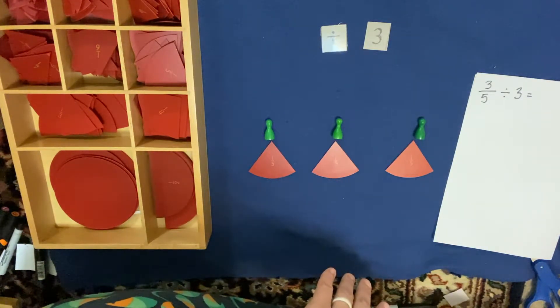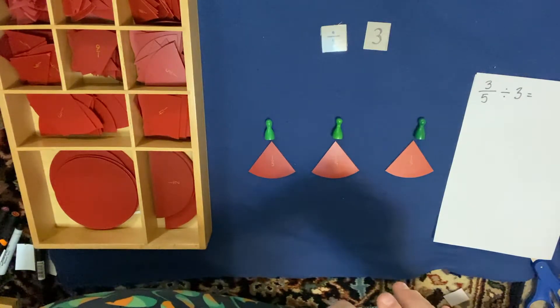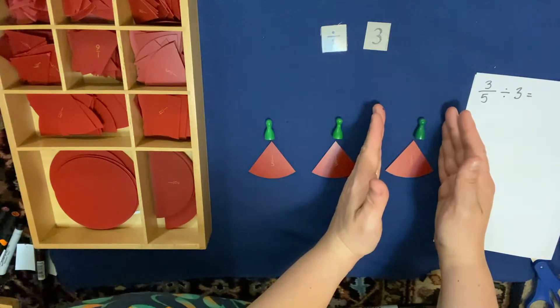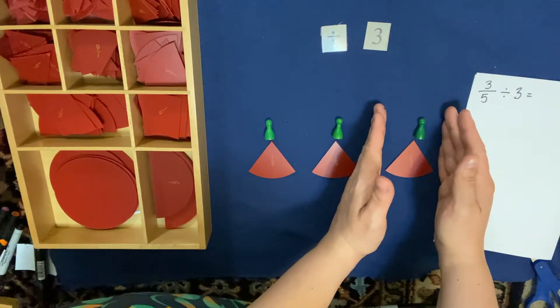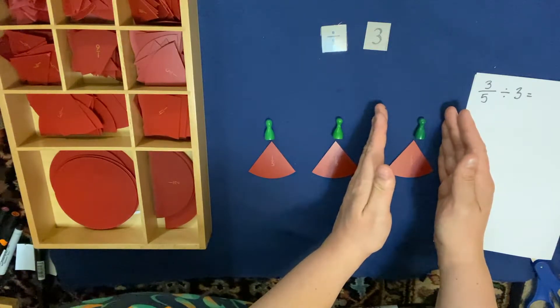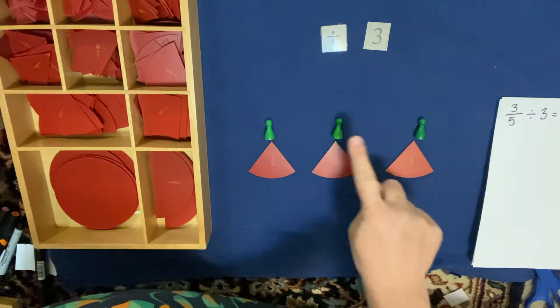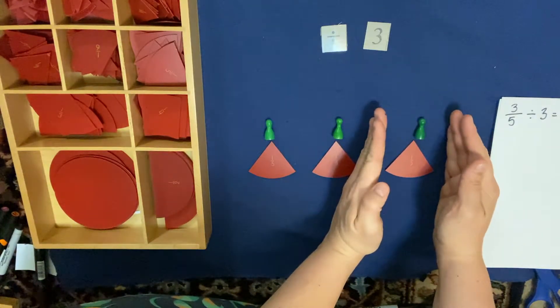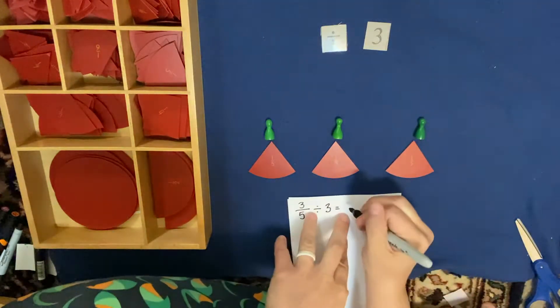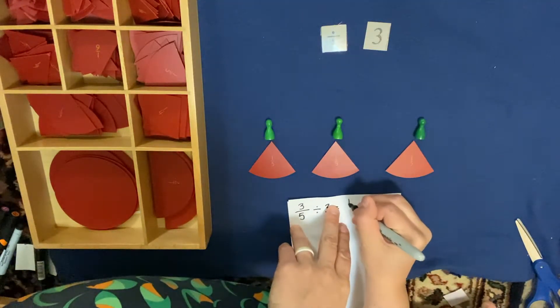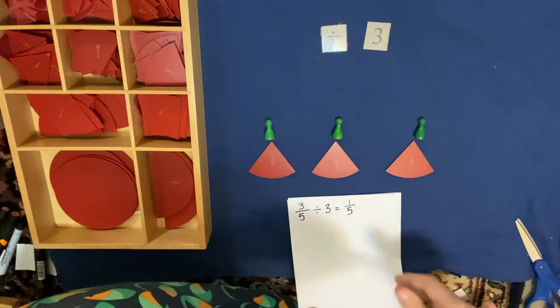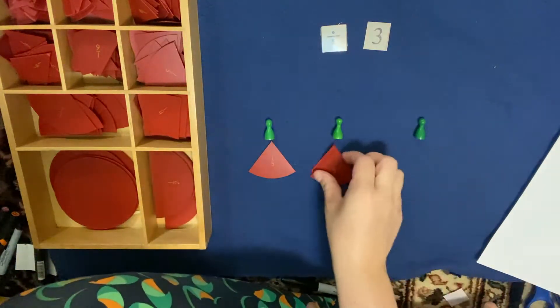So we're done dividing. Now we need to find our answer. So if you remember, when we want to find our answer, we always have to look at one unit's place. We want to know how many each Skittle got. Did each Skittle get 3? No, we had 3 altogether. Each individual Skittle got 1/5. So I'm going to write that. 3/5 divided by 3 equals 1/5. There we go.